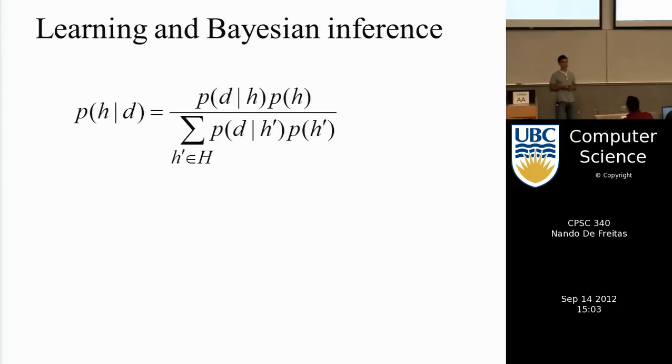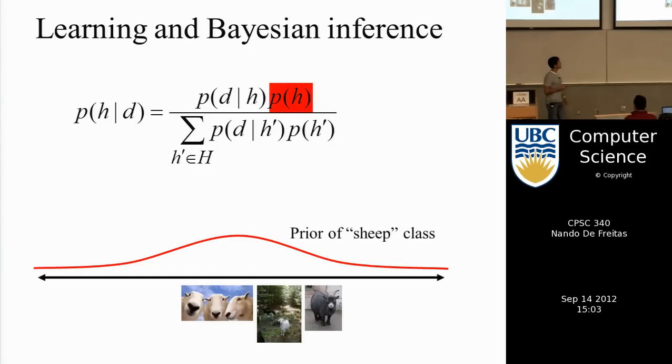We also very quickly saw that Bayes rule gives us a model for cognition, where in our heads we'll have many hypotheses.